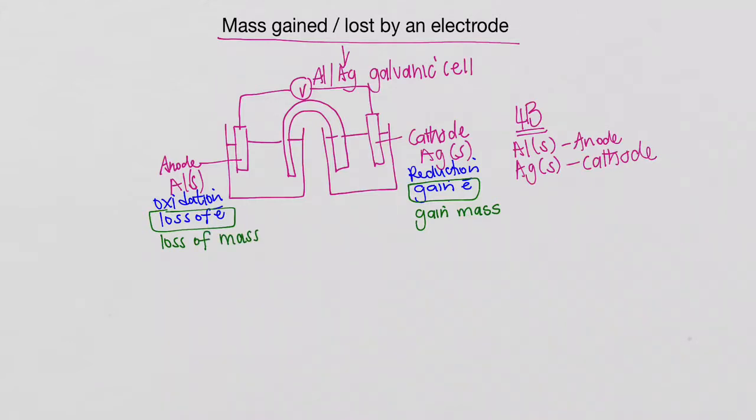So up to here, we've pretty much discussed all of this in our online lessons, but now the question is, how can we work out exactly what mass of aluminium is lost and what mass of silver is actually gained?